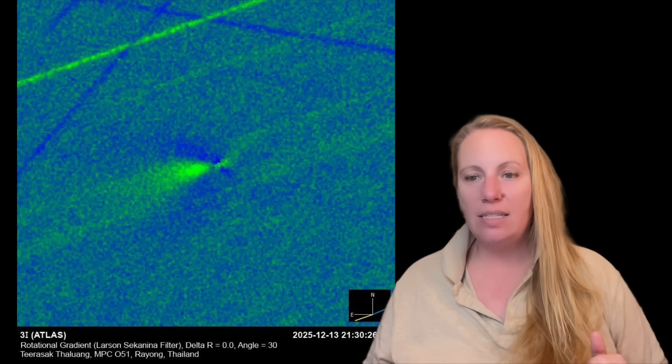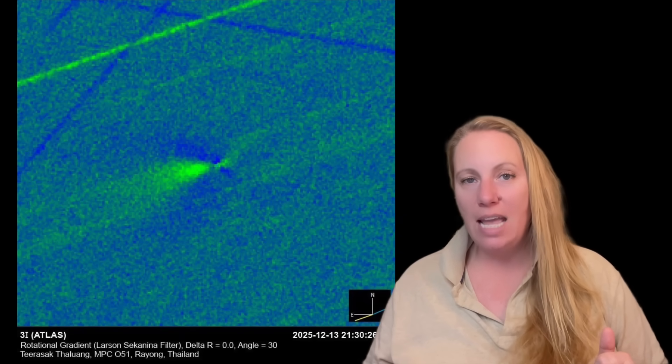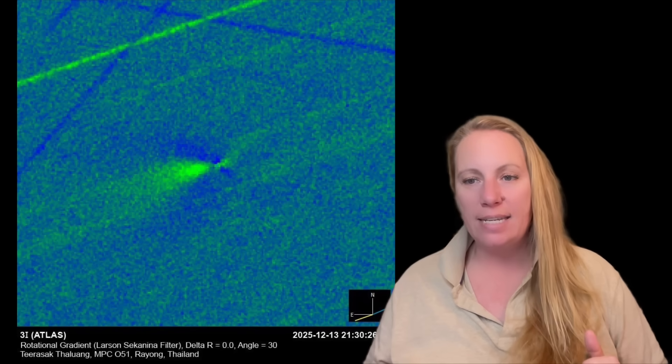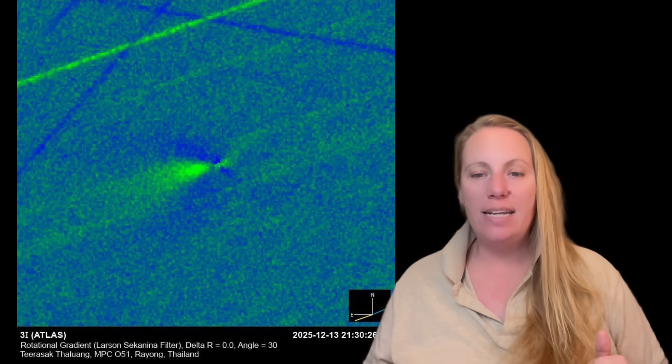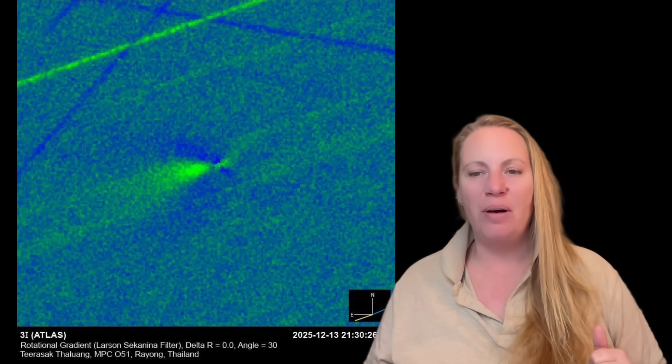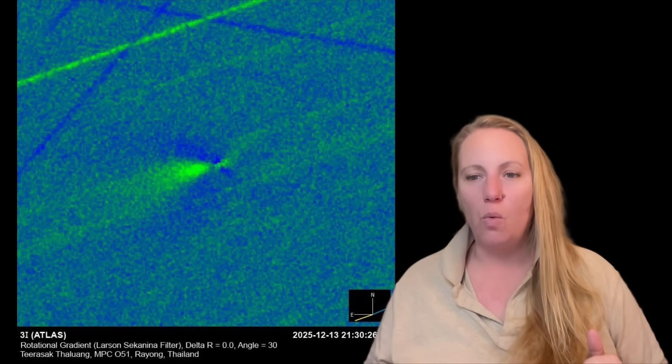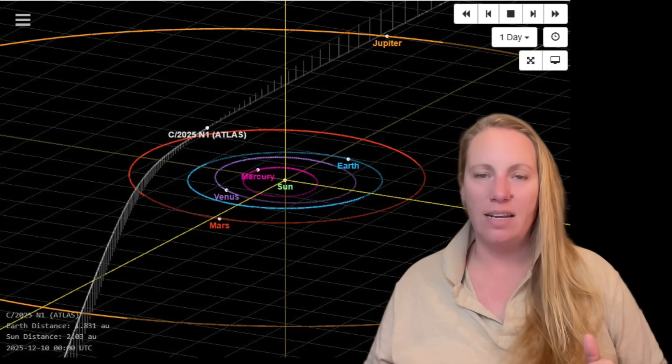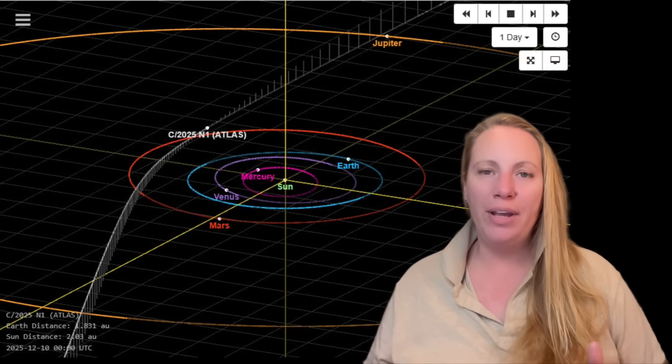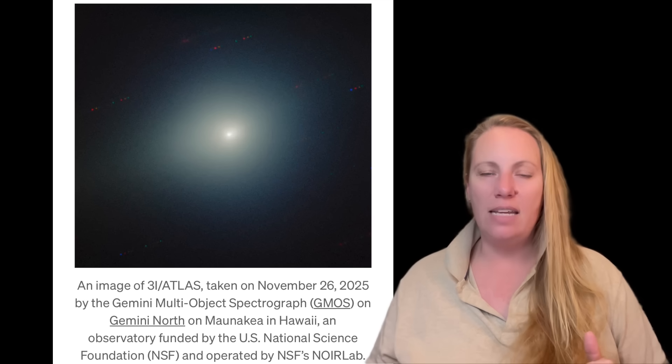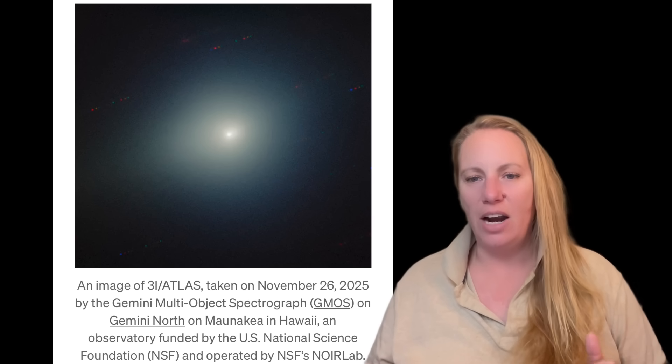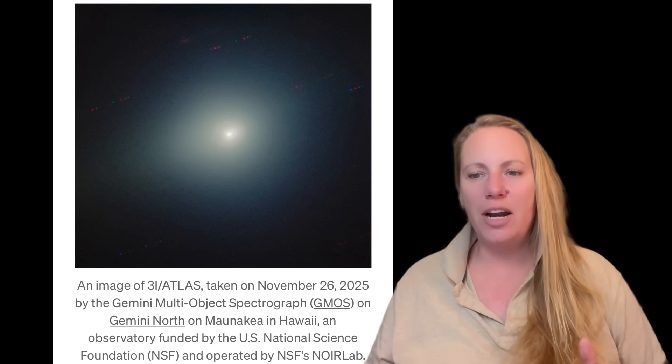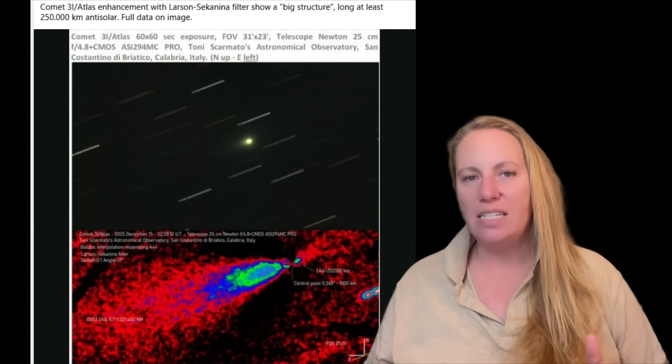And the latest images that we have here, they do show this prominent anti-tail that extends out to half a million kilometers away from the nucleus of 3i Atlas towards the sun. A sunward-pointing anti-tail that is immensely large.